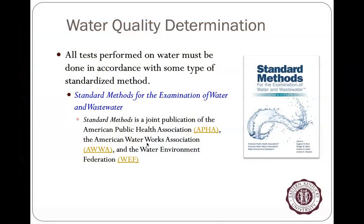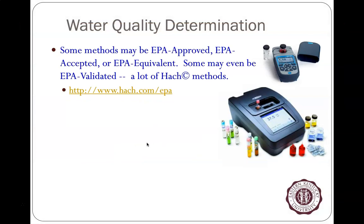Standard Methods covers everything from how to test for total chlorine, to arsenic, to pesticides. Just having the book doesn't mean you'll be able to do it — some of the technology required can be quite demanding. For environmental, public, and ecological health compliance, companies like HACH have developed kits that make EPA-accepted or equivalent methods simpler.